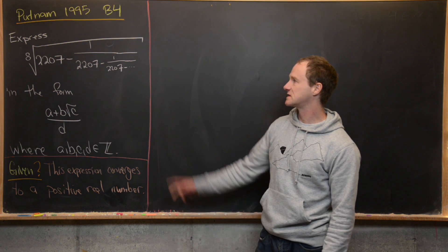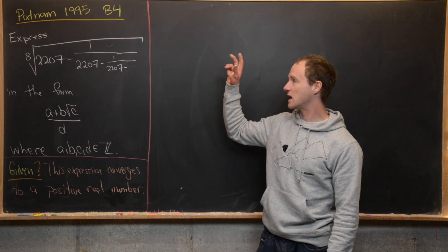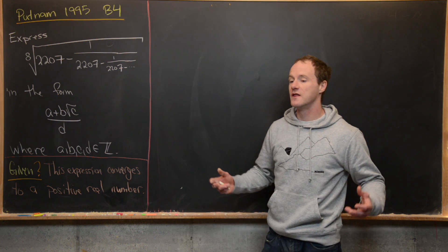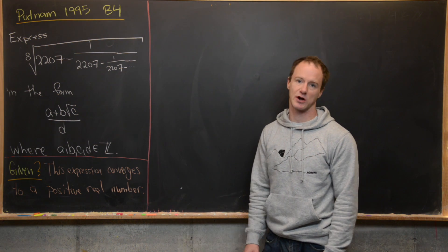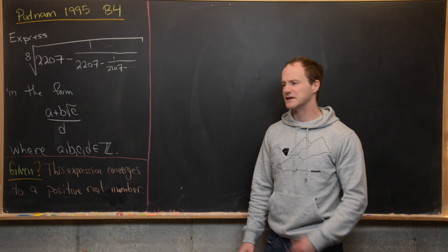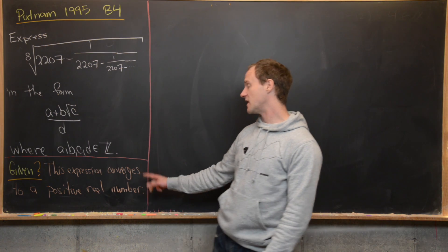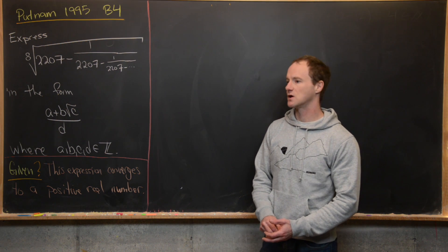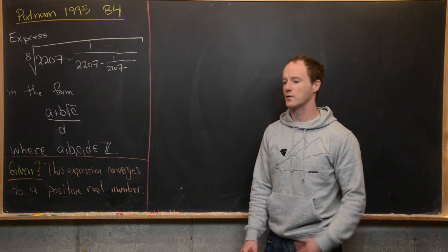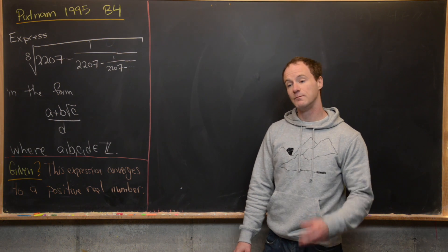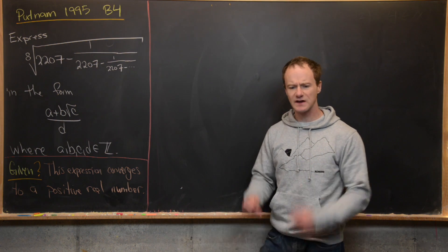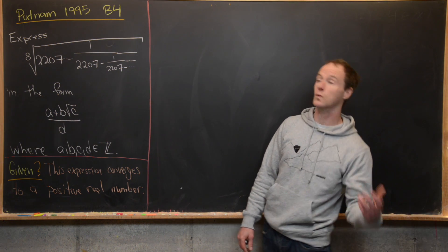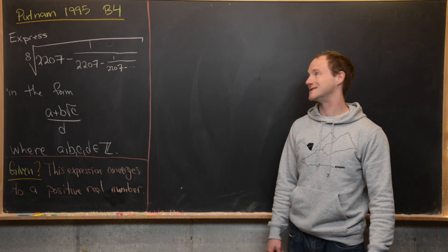Built into this problem — since it says to express this in this form without questioning whether such an expression exists — I think you can assume the continued fraction converges to a positive real number. So the tricky stuff with convergence is already built into the wording of the problem. Post in the comments if you know more about exactly how these things are graded.